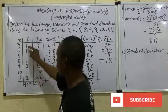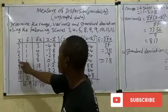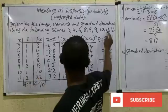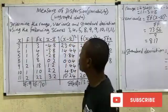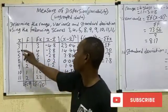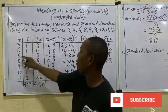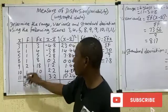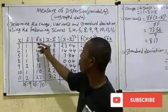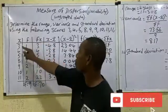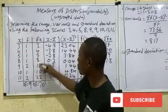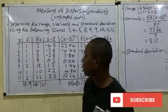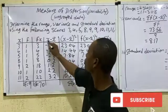How many times does each value occur? 3 occurs once, 4 once, 5 once, 8 once, 9 occurs twice so we put 2, 10 once, and 11 occurs twice so we put 2. Now to find fx, multiply each x by its frequency f: 3×1=3, 4×1=4, 5×1=5, and so on. The sum of the frequencies (Σf) is 9, and the sum of fx (Σfx) is 70.